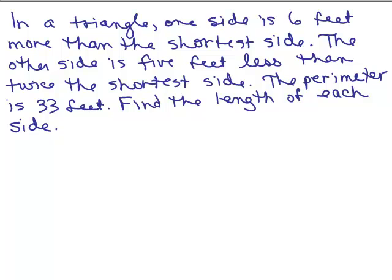The other side is 5 feet less than twice the shortest side. So I have to know the shortest side first. Let's just define our variables that way. Let's say the shortest side, how about we call that X?